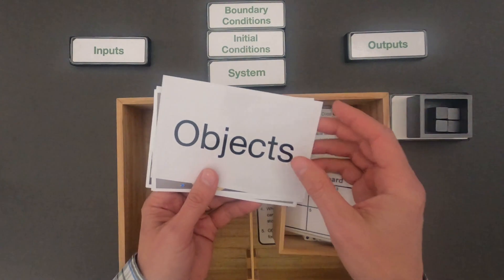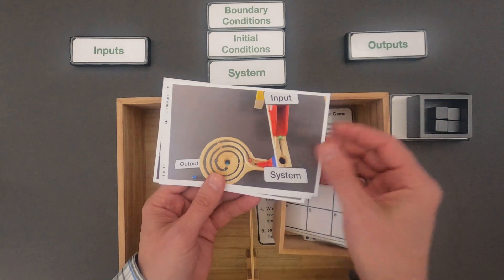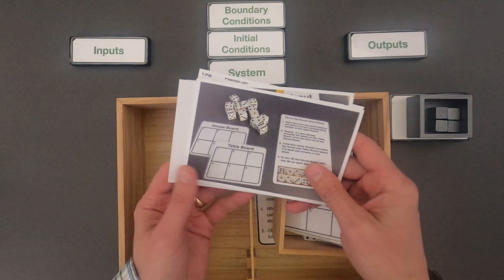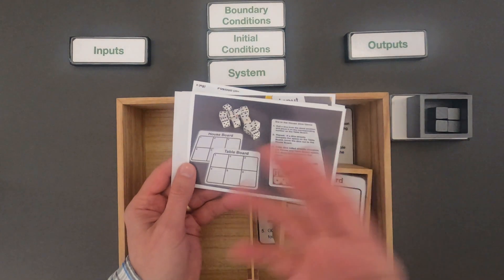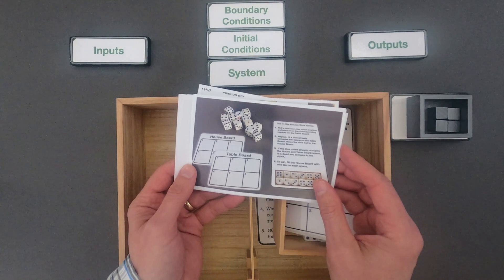you should be able to look at defined boundary and initial conditions in a system like a marble run or in physics we would use this in conservation of momentum. But I'm going to start by showing you inputs, outputs, boundary, and initial conditions in a simple game called Six in the House.